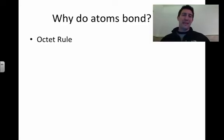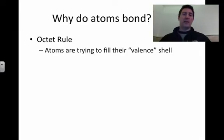Atoms are always trying to meet the octet rule. Oct meaning 8. So they're always trying to get 8 electrons in their outermost shell. And another name for outermost shell is their valence shell. We're pretty much only going to deal with the valence shell because that's the outermost shell that interacts with other electrons and other valence shells.